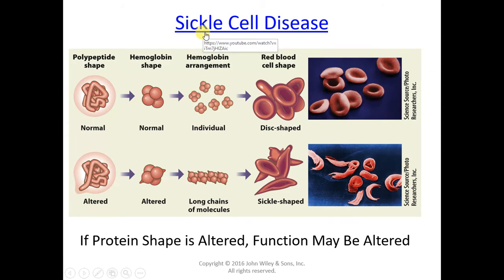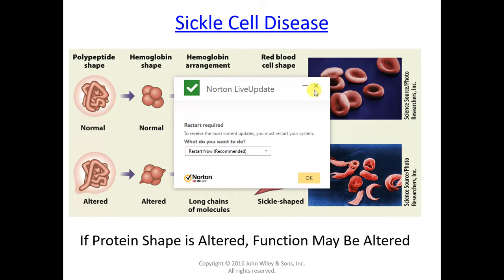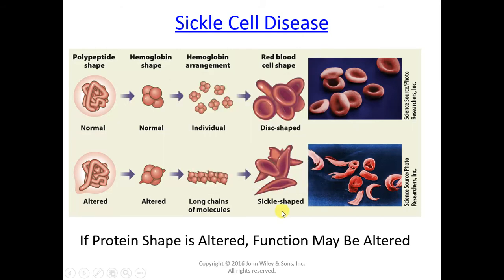In sickle cell disease, there is one error in the amino acid sequencing for hemoglobin. Because of that, and the way the hemoglobin lines up — especially under low oxygen conditions — the red blood cell is sickle-shaped instead of disc-shaped. This can cause pain, disability, and tissue damage because these sickle-shaped red blood cells get stuck in capillaries and don't carry oxygen well.